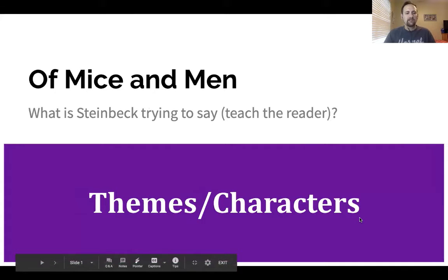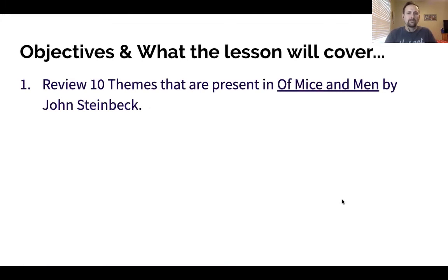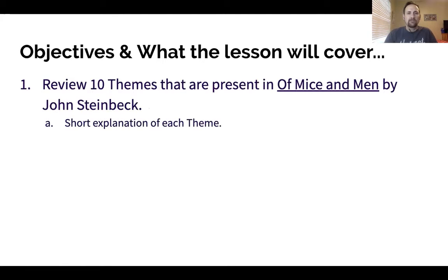Here's your lesson for today. We're going to be going over Of Mice and Men — what themes are present and what characters might be attached to those themes. Here are your objectives for what our lesson will cover today. First, I'm going to review the ten themes that are present in Of Mice and Men by John Steinbeck. There are probably more than ten, but these are the top ten that we decided on as a group of teachers to show to you guys. I'll give you a short explanation of each of the themes that we chose.